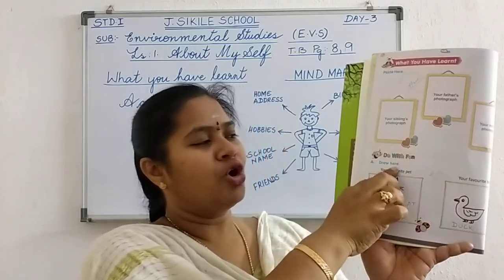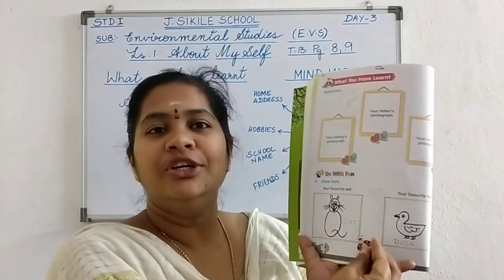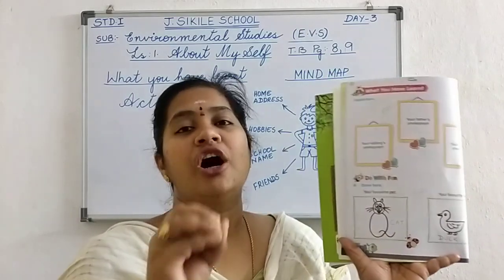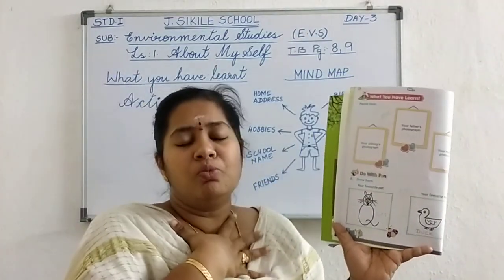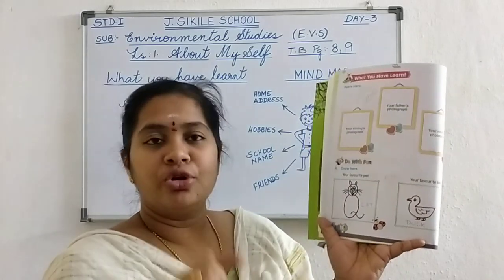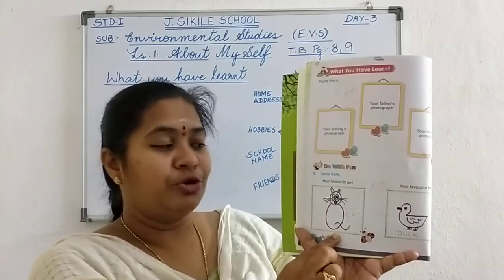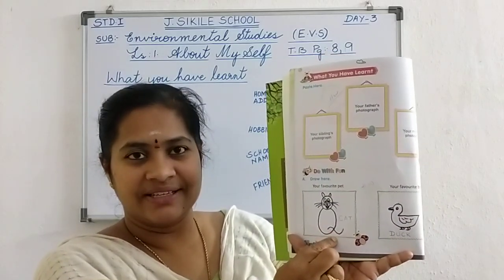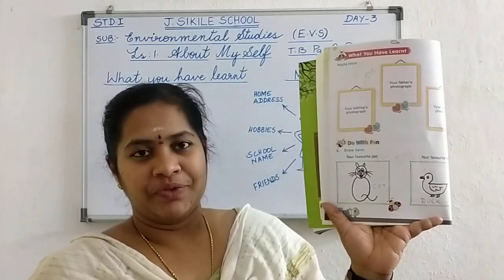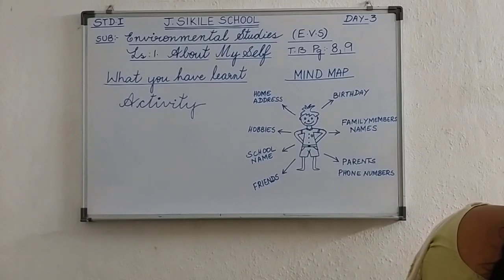You have to draw your favorite things in these boxes — do it with fun! This is a small drawing activity. Your favorite things — which you like most — you are going to draw. First box: your favorite pet. If you don't know how to draw a dog, you can draw a cat. If you don't know how to draw, ask your mummy to cut a picture and paste it in the box. But try to draw — see how I am drawing the cat. Very easy, with shapes you can draw.